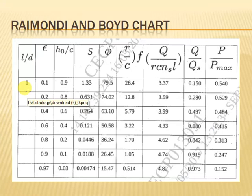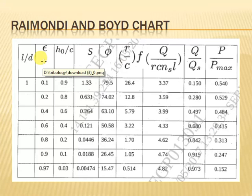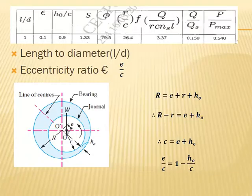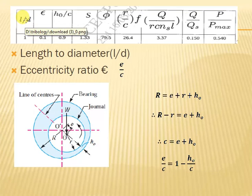Today we are covering only the theory of the Raimondi and Boyle chart. The first parameter is L/D — a dimensionless ratio of length of bearing to diameter of shaft. There are four options: infinity, 1, 1/2, and 1/4. Numericals generally involve L/D ratio of 1 or 1/2.